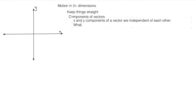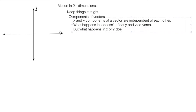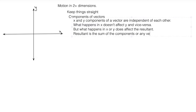What happens in X doesn't affect Y and vice versa. But what happens in X or Y does affect the resultant. The resultant is the sum of the components or any vectors. That's kind of everything, but we'll give you a couple of examples here.